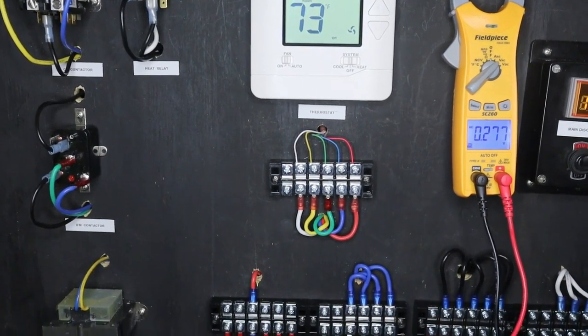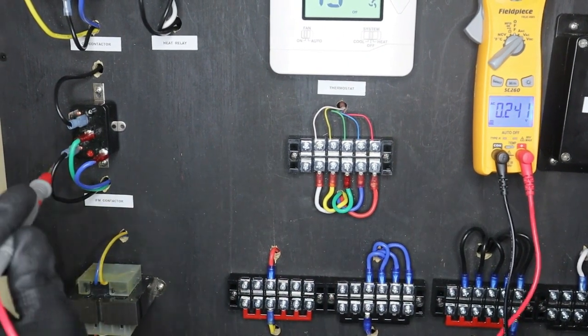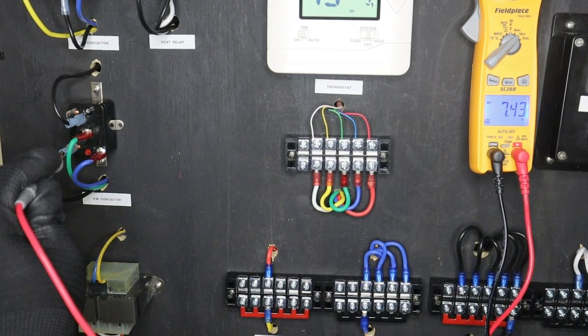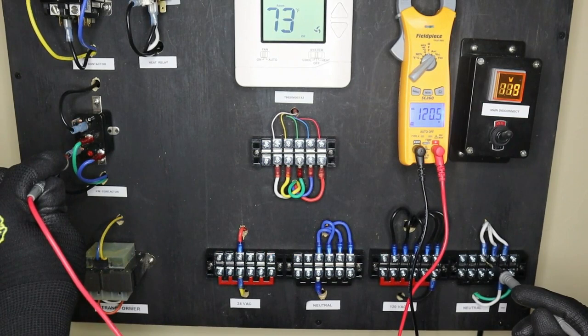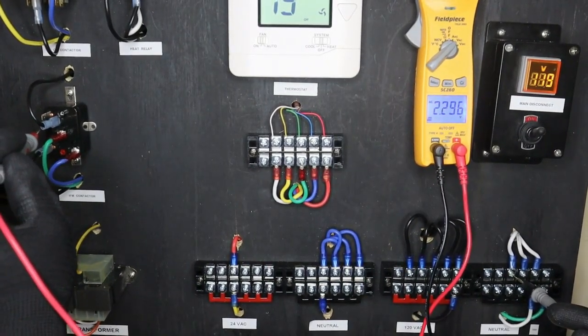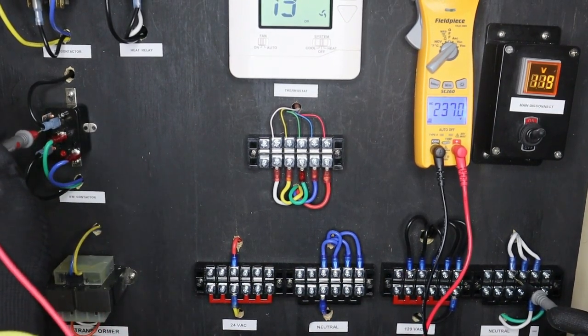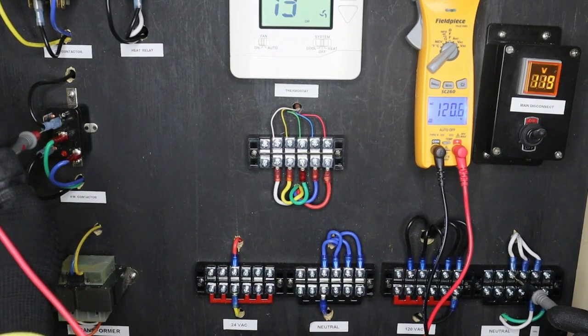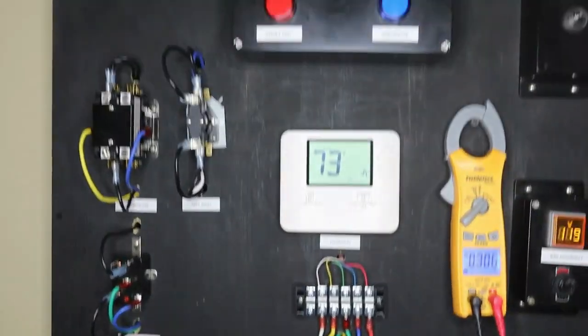Now let us check our incoming power to our fan relay. One lead goes to the incoming hot, one goes to neutral. So we are getting 120 volts. Let's check the output which was our normally open, but since we have power going to the coil this is now closed. So we have 120 volts AC at the output of our contactor thus energizing our indoor blower.